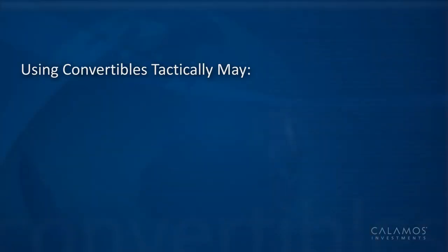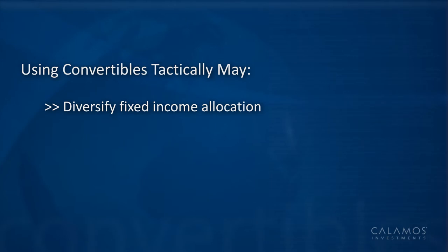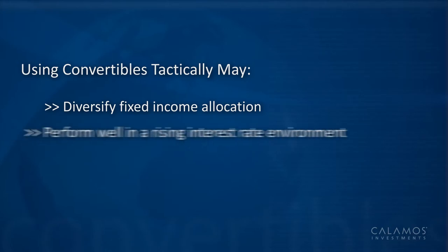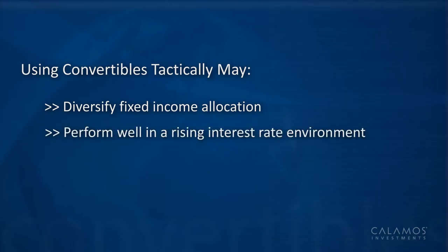As we discussed, a core allocation to convertibles will be held through full and multiple market cycles. But at different points in time in the cycle, it's helpful to use convertibles as a tactical part of the asset allocation. In particular, convertibles can be helpful as a way to diversify a fixed income portfolio. In periods of rising interest rates, convertibles tend to perform well and serve an important diversification benefit relative to fixed income.